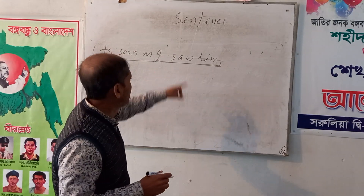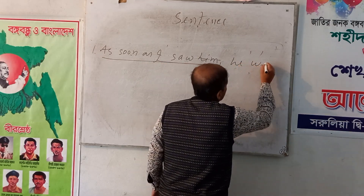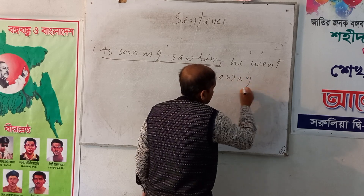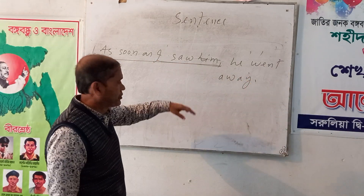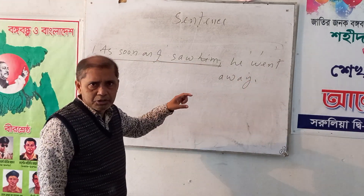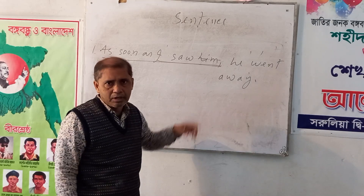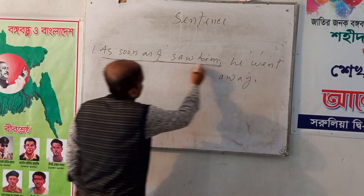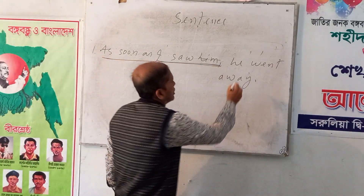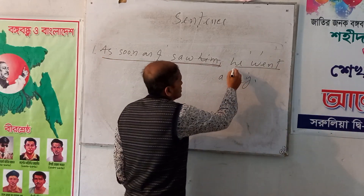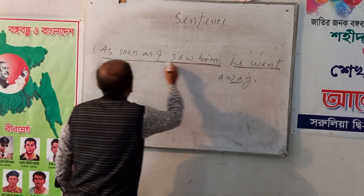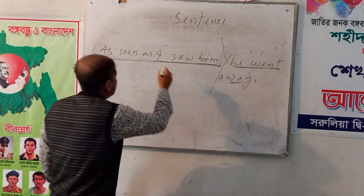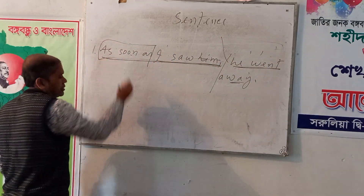As soon as I saw him — he went away. Please notice the board. Look at the board. I think you will clearly understand from it. 'As soon as I saw him' is one clause on the board, and the other part is another clause. There is a conjunction before that clause, so it is a subordinate clause.